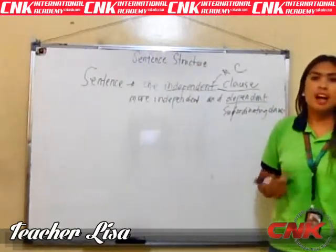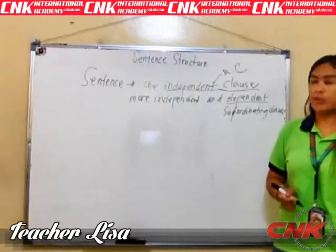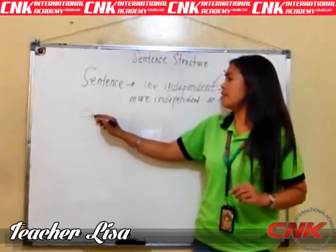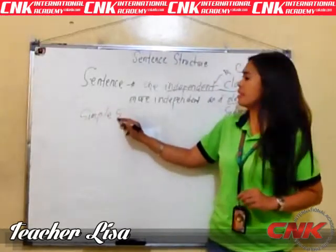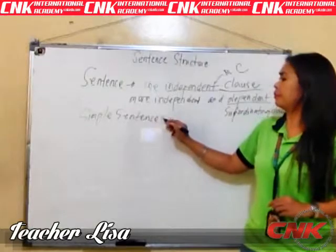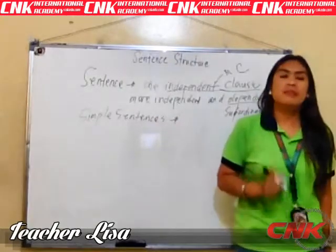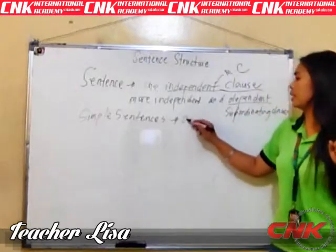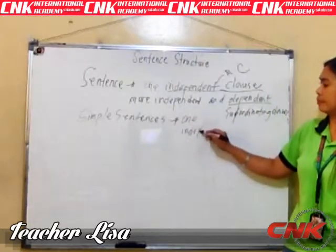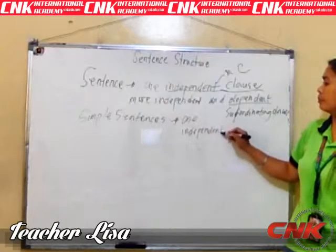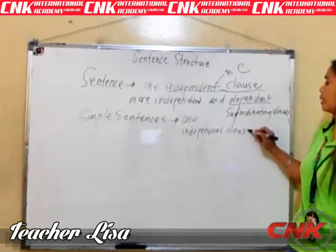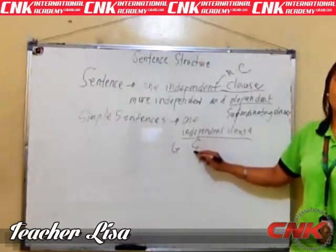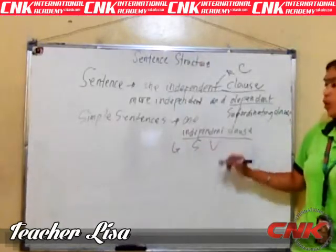There are actually three kinds of sentences according to structure. First, we have simple sentences. A simple sentence may only consist of one independent clause. An independent clause always has a subject and a verb.